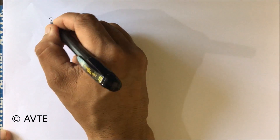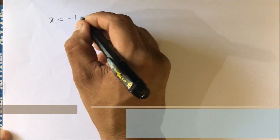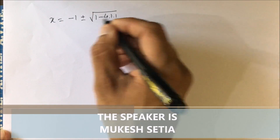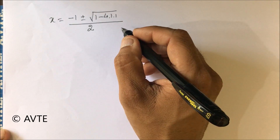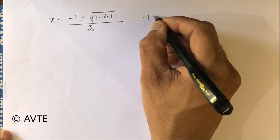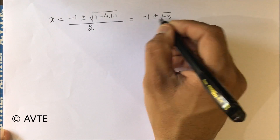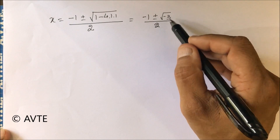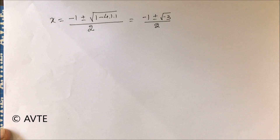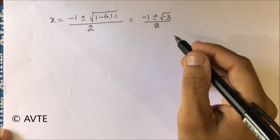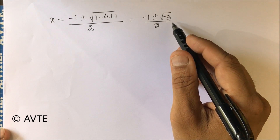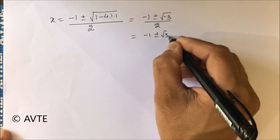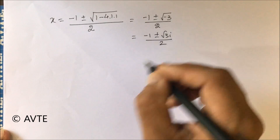Applying the quadratic formula x equals minus b plus or minus under root of b square minus 4ac divided by 2a with its usual meaning, we get the result divided by 2. Since the square root contains a negative quantity inside, this cannot be a real answer — it is an imaginary or complex answer. So we introduce iota to express these roots.